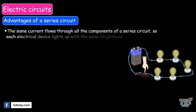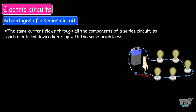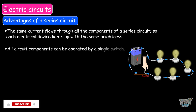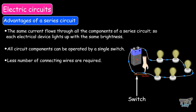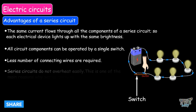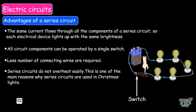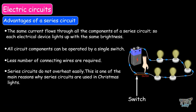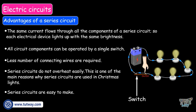Let us discuss some advantages and disadvantages of a series circuit. The same current flows through all the components, so each electrical device lights up with the same brightness. All circuit components can be operated by a single switch. A lower number of connecting wires are required. Series circuits do not overheat easily — this is one of the main reasons they are used in Christmas lights. Series circuits are easy to make.